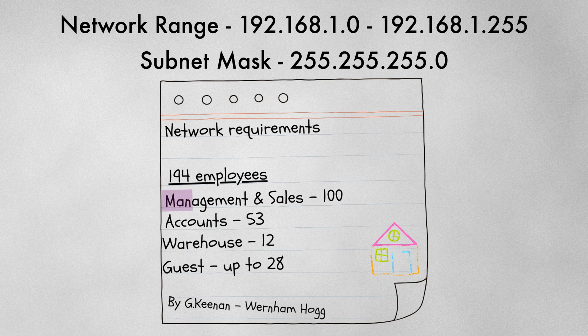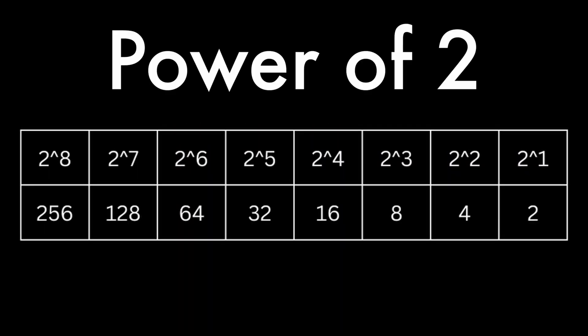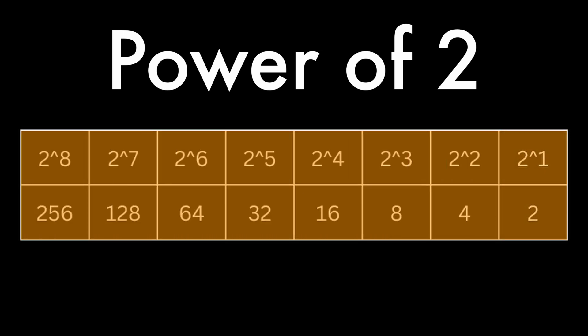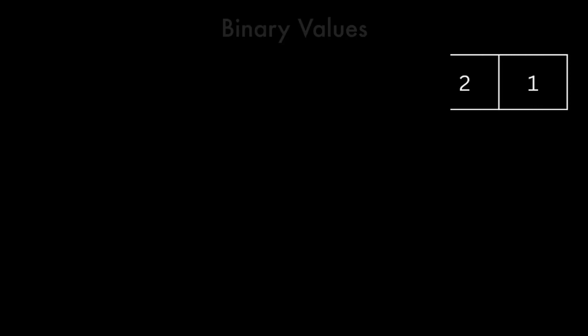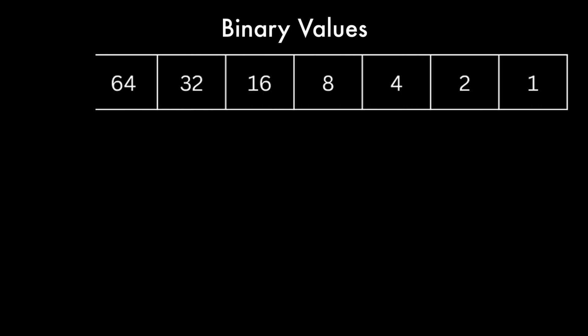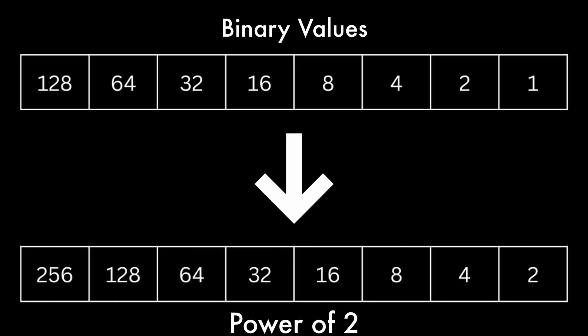Let's chop this up into variable length subnet masks, starting with the Management and Sales Reps network — the biggest, with 100 devices. We can't create a network to accommodate exactly 100 devices; subnetting is based on powers of two. A good way to remember: write out your binary values — 1, 2, 4, 8, 16, 32, 64, 128 — and underneath, double them: 2, 4, 8, 16, 32, 64, 128, 256.